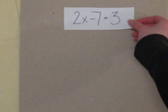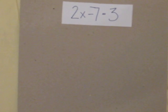By now, we know what to do if we're given an equation with only one letter in it, like 2x minus 7 equals 3.